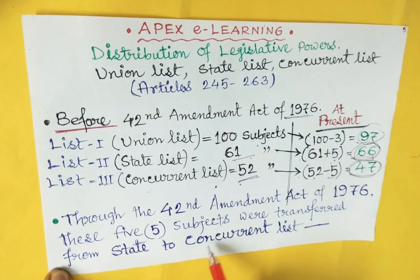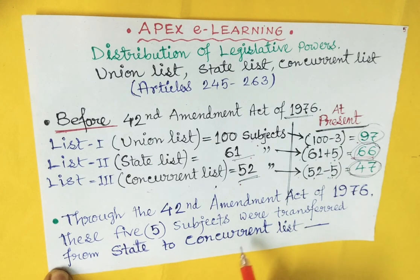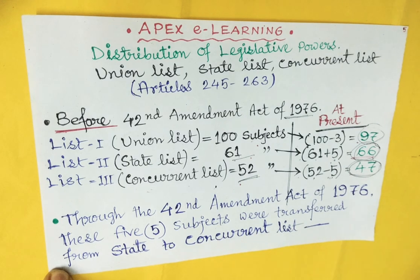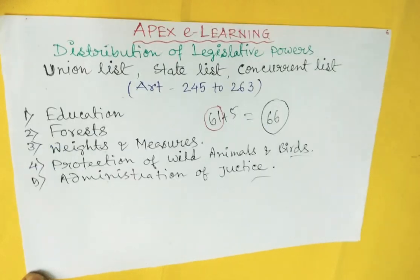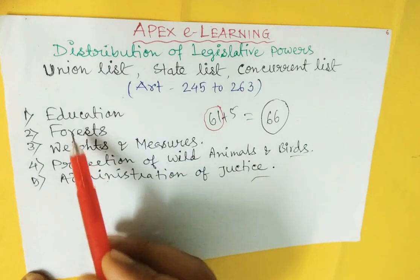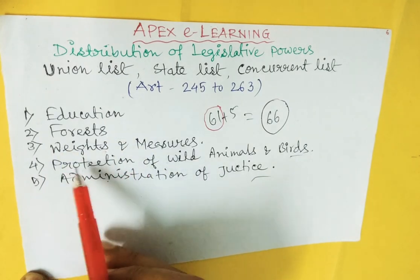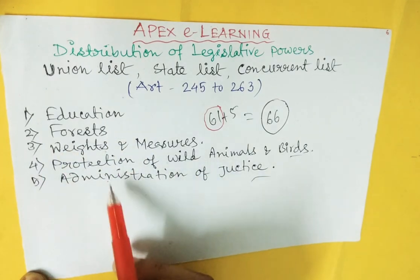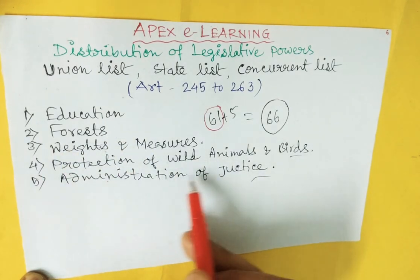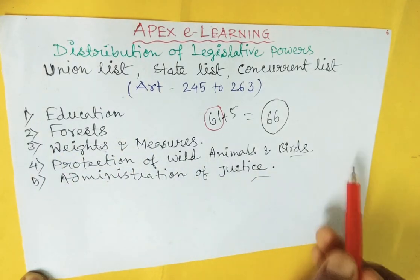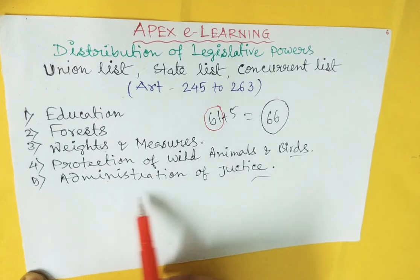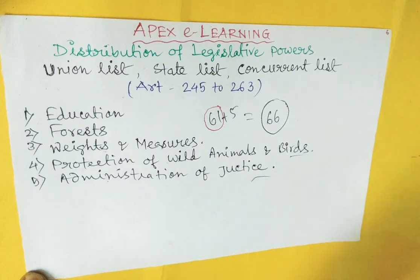We have already told that five subjects were transferred from the state list to the concurrent list. These are: education, forest, weights and measures, protection of wild animals and birds, and administration of justice.